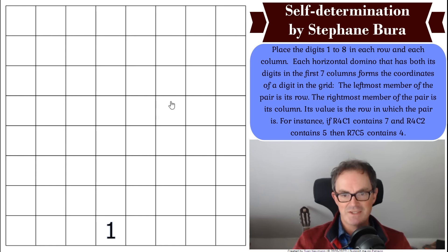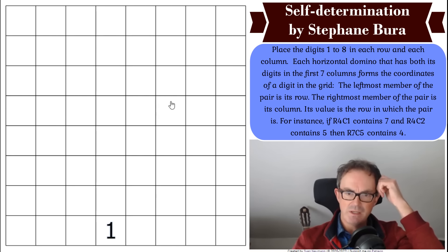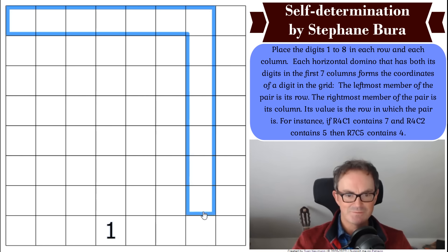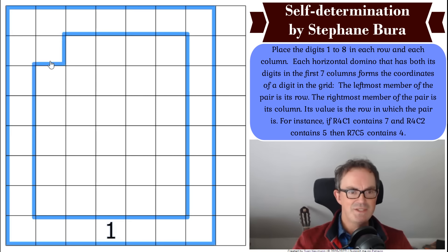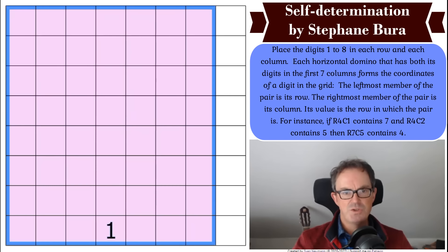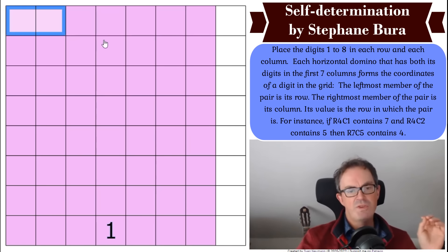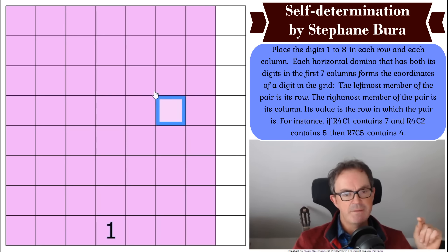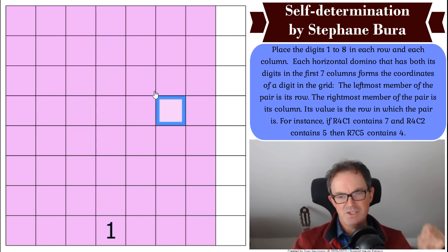"Self-Determination" — is that some sort of clue as to how I'm meant to solve this? Each horizontal domino, and it's only the first seven columns of the grid, so those digits — well, each domino within this pattern. There are actually quite a lot of dominoes in this pattern.